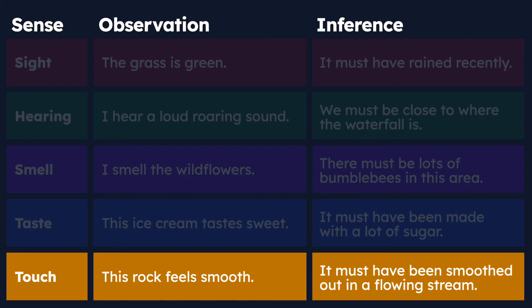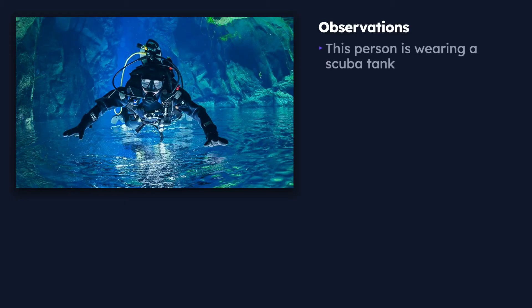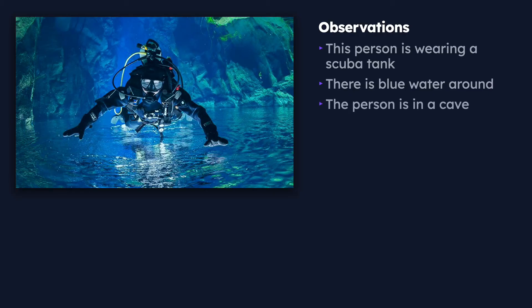Let's take a look at a neat picture that offers an opportunity to make observations and inferences. Looking at the image, we might observe that this person is wearing a scuba tank — we can see the tank on their back with tubes going to their mouth. We can observe that there is blue water around them, something we can see directly with our eyes. We can also observe that this person appears to be in a cave, as it's dark and there are rocks all around the image.